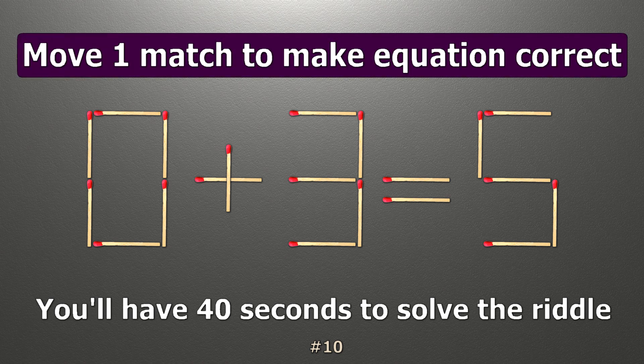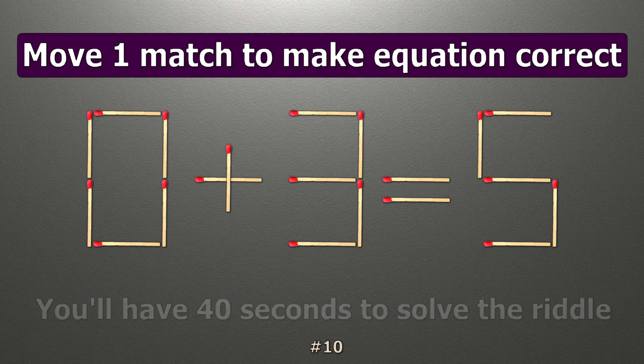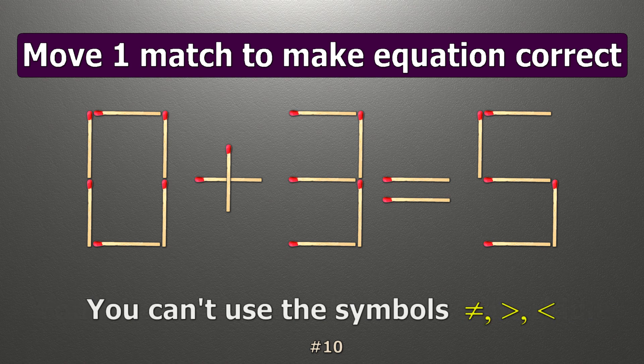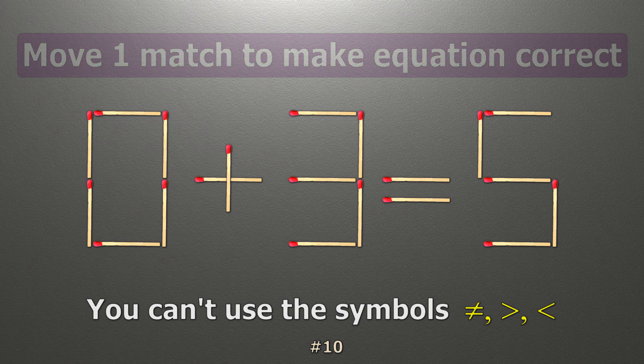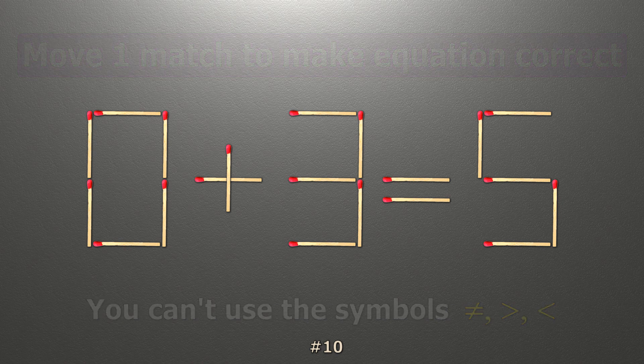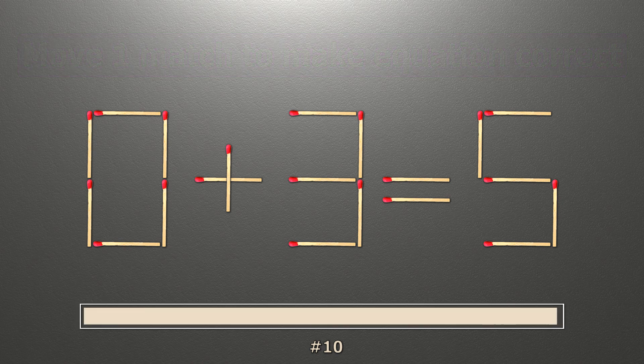We have the equality 0 plus 3 equals 5. Our equality is wrong. We need to move one match to make our equality correct.